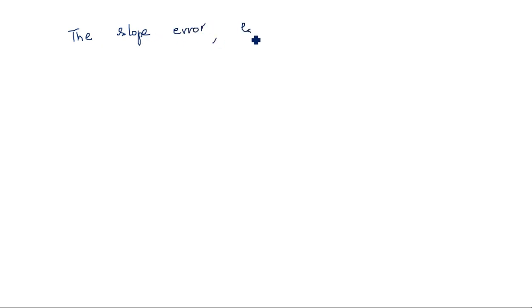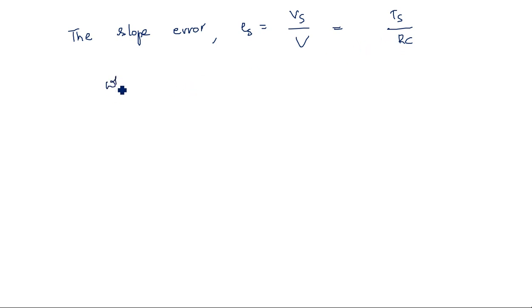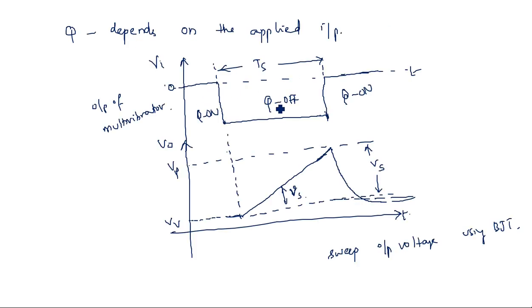In this way we can design a sawtooth waveform generator using a bipolar junction transistor. The slope error Es is equal to Vs divided by V, which equals Ts divided by RC. We have already calculated how this Ts by RC is derived, where Vs equals Vp minus Vv.